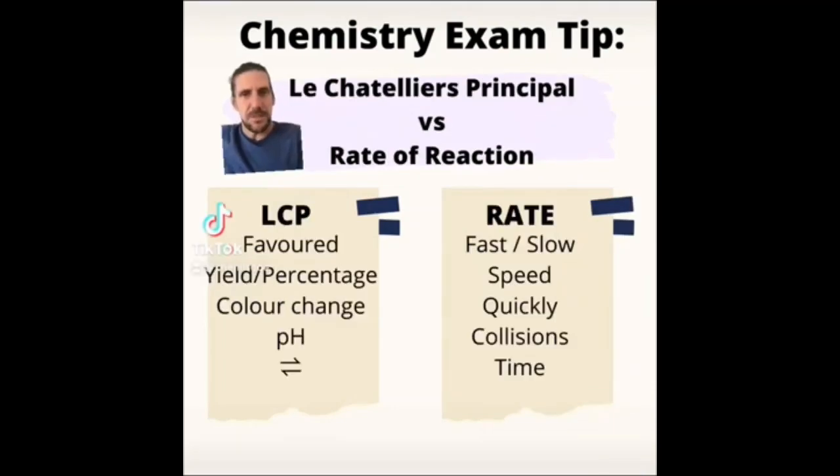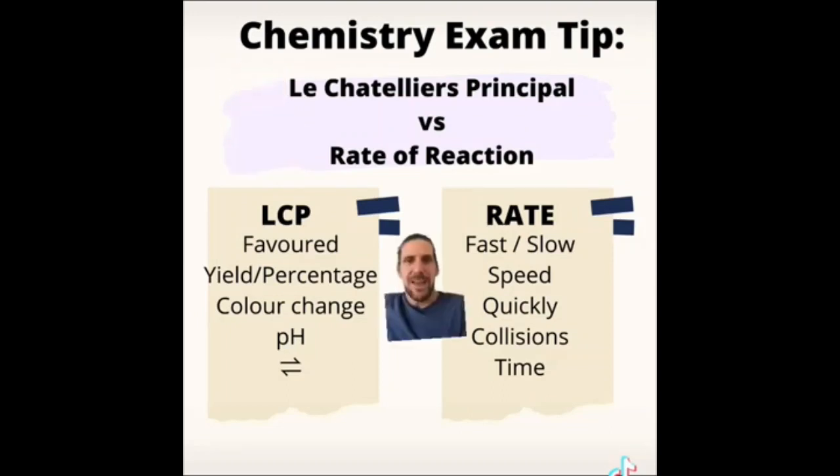Chemistry exam tip number nine. This one is all about the Le Chatelier's principle versus rates of reaction. These two concepts are often talked about in questions and time and time again, they are confused. How these are confused is the fact that people start using the wrong theory to answer questions. What you need to be aware of is what is the question asking me and what theory do I need to draw on? Is it to do with Le Chatelier's principle and opposing a change or is it to do with rate of reaction and is it about collision theory?